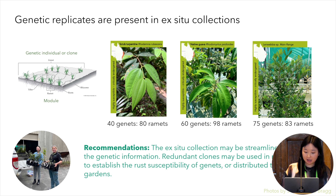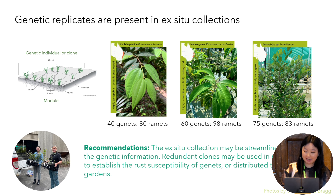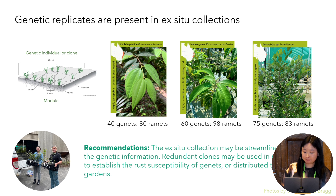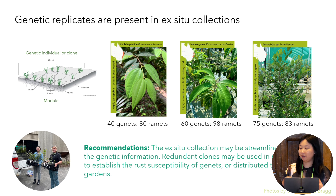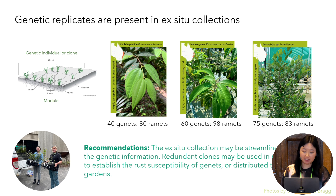This information can be used to streamline the ex-situ collection, and redundant clones could be distributed to other botanic gardens. Amelia Martinyensa will talk about a project to develop dispersed collections focusing on native guava later in the conference. The plants can also be used in rust experiments to determine if certain genets are more resistant to rust. Field observations can be confounded by environmental factors, so they often don't give an accurate indication of rust susceptibility. Gathering information from different data streams — genetic, field phenotype, and experimental phenotype — is valuable in building capacity for effective conservation management.